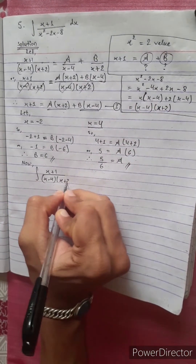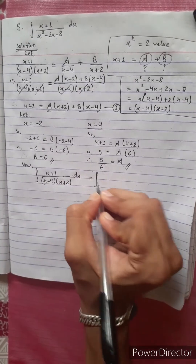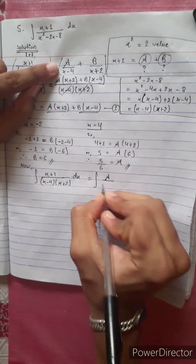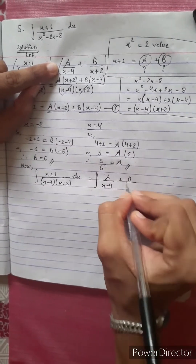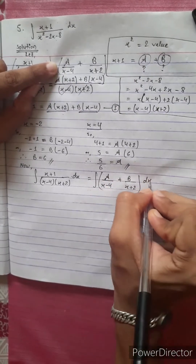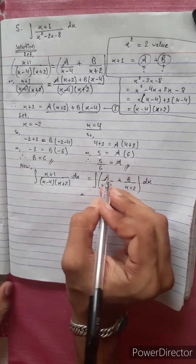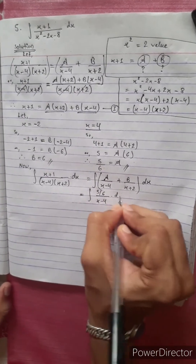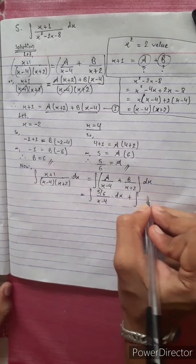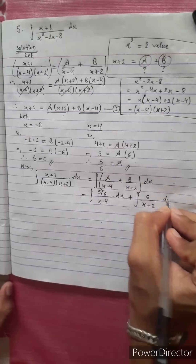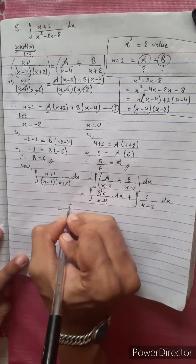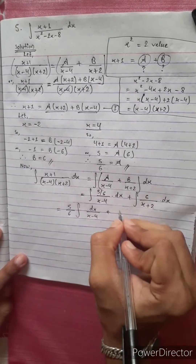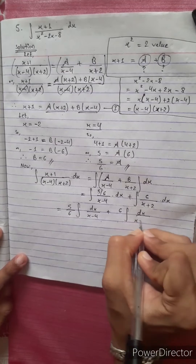Now the integration of (x plus 1) divided by (x squared minus 2x minus 8) dx equals integration of A divided by (x minus 4) plus B divided by (x plus 2) dx. Substituting A equals 5 by 6 and B equals 1 by 6, we get integration of 5 by 6 over (x minus 4) dx plus integration of 1 by 6 over (x plus 2) dx.